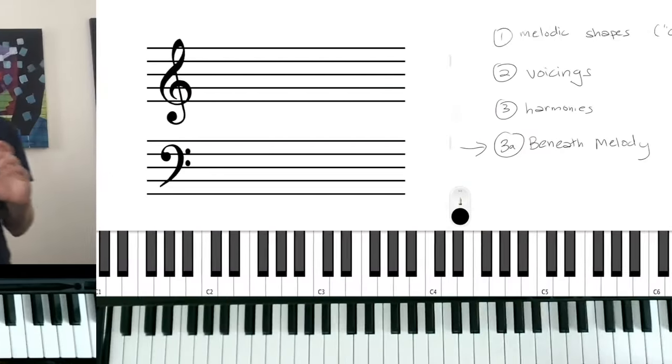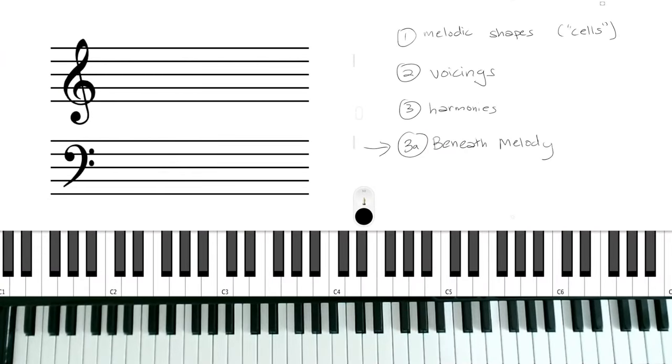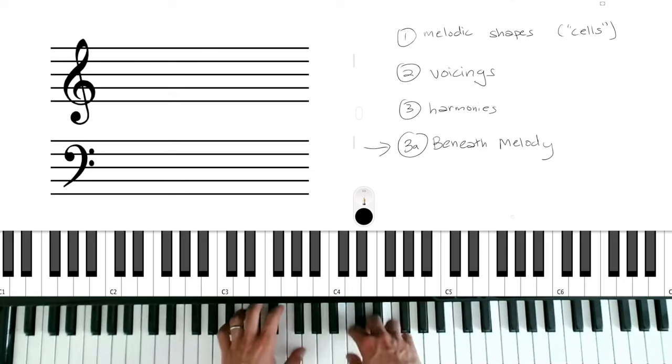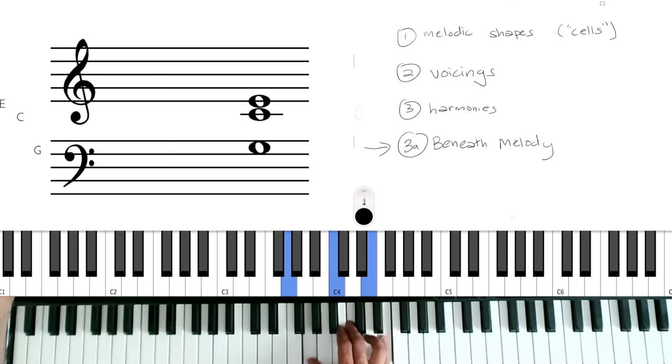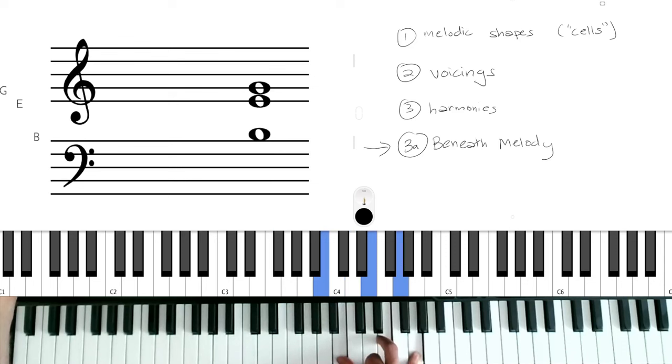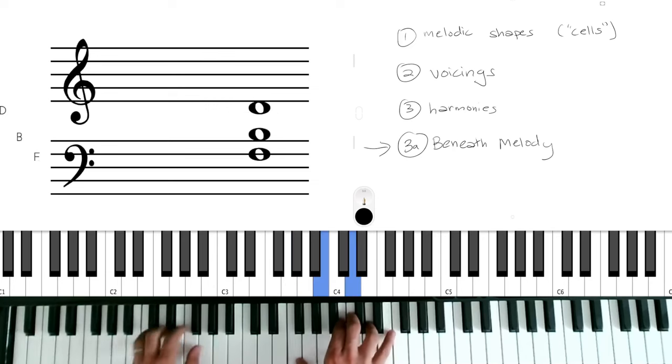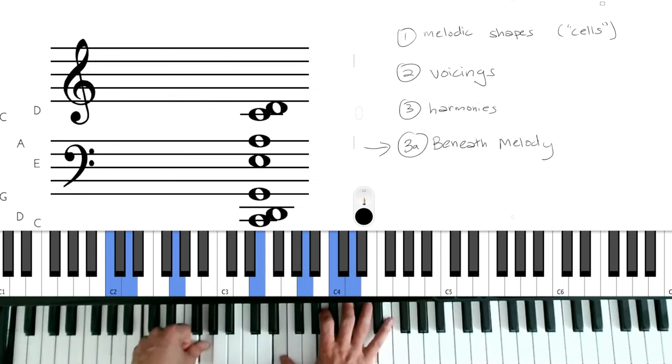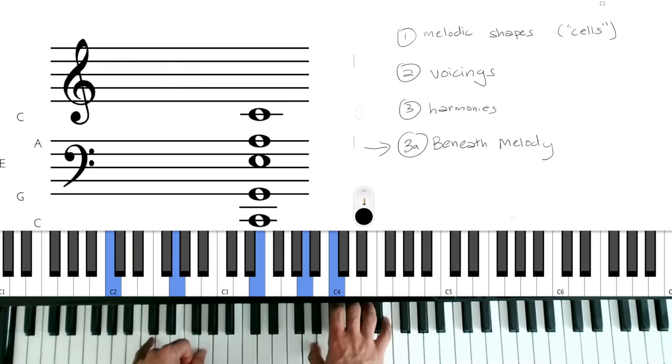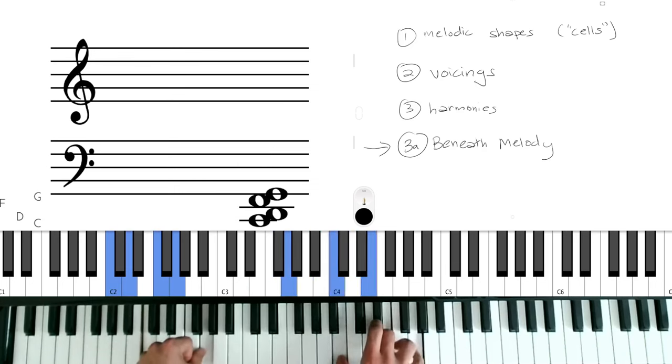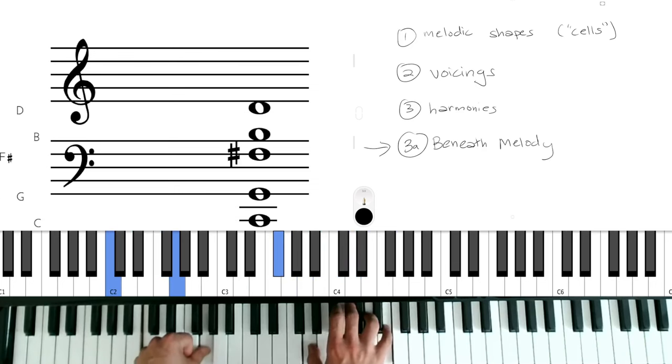And let's just contrast this again with modal voicings. If I'm doing modal voicings in C, then I'm never going to go outside of the key. So I'm always going to have a third and a fourth below the melody. But it's all going to be within C Ionian or maybe I do it with C Lydian.